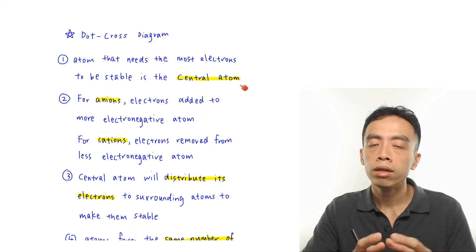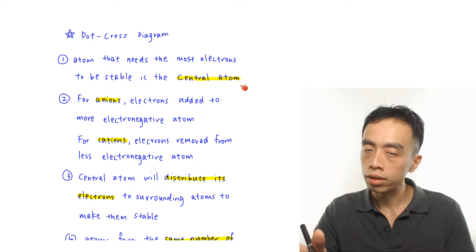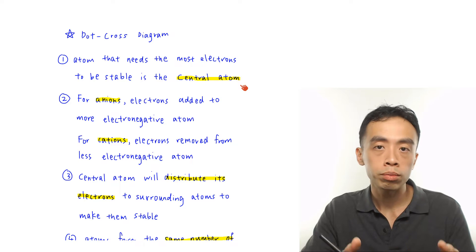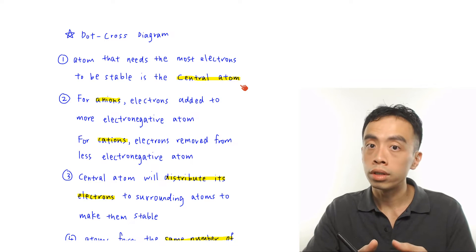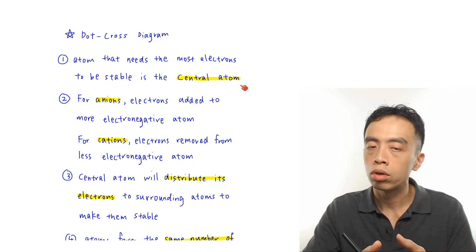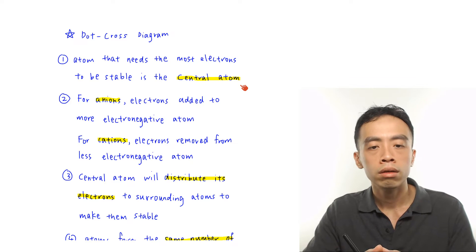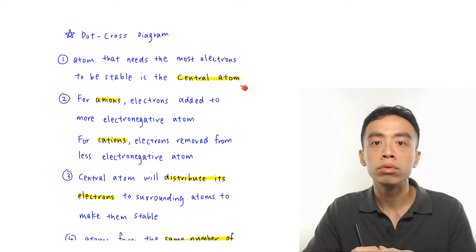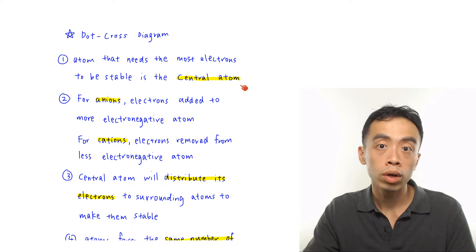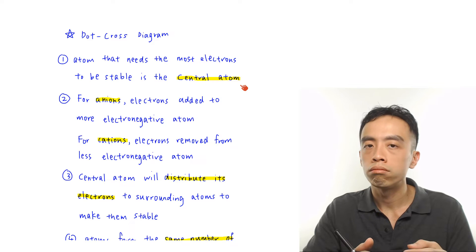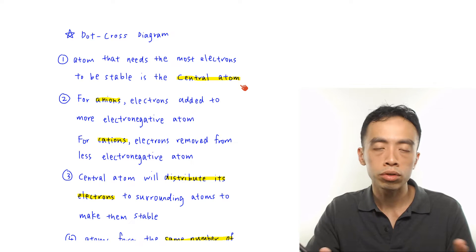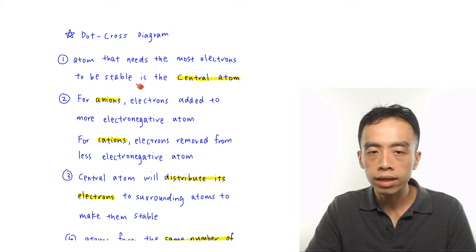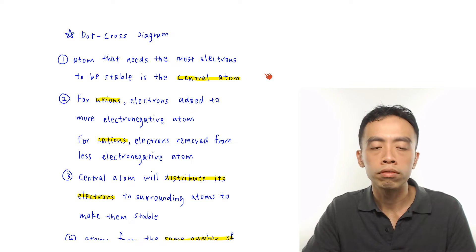Usually the atom which requires more bonds to be stable or reach octet would be at the center. And for species that can expand octet, because they can potentially form more bonds, they would also sit at the center. In general, there are a few guidelines that schools might go through, but all of them have exceptions. My preference is to stick to just this one guideline so that it will not be so confusing.